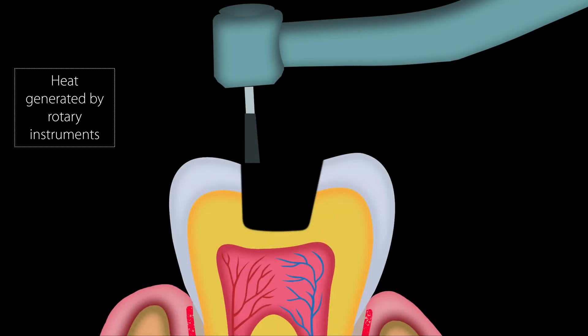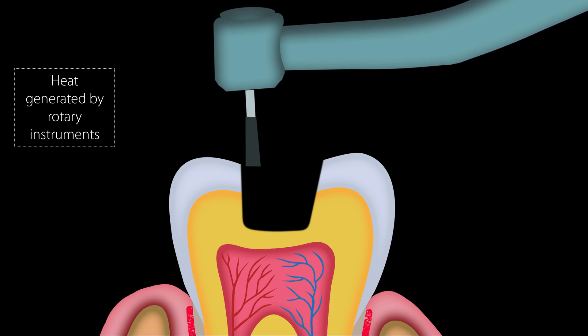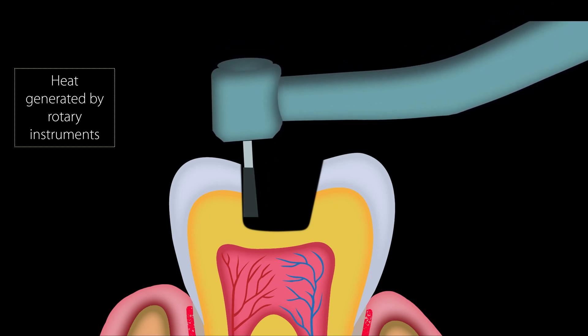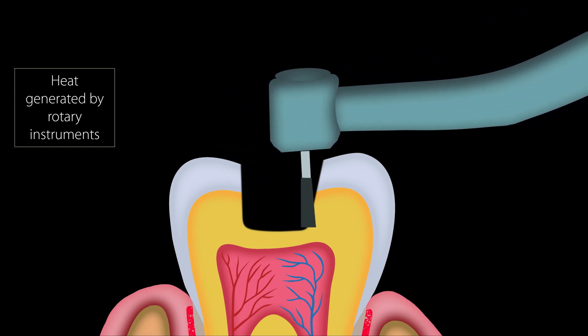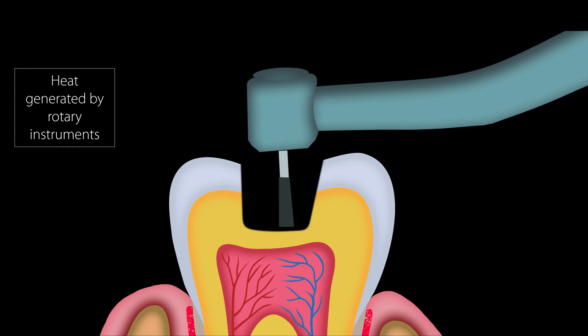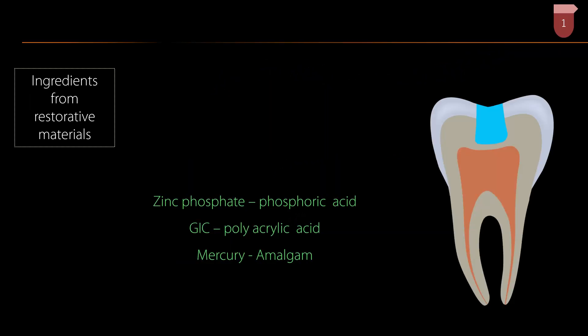First: heat generated by rotary instruments. While using an airotor for caries removal, the bur rotates at around 200,000 rotations per minute. When using a micromotor without a water coolant, the bur rotates at around 25,000 rotations per minute. This rotation generates a lot of heat. If this heat is conducted through the remaining dentine to the dental pulp, the soft tissue will get damaged. We should prevent or minimize this.